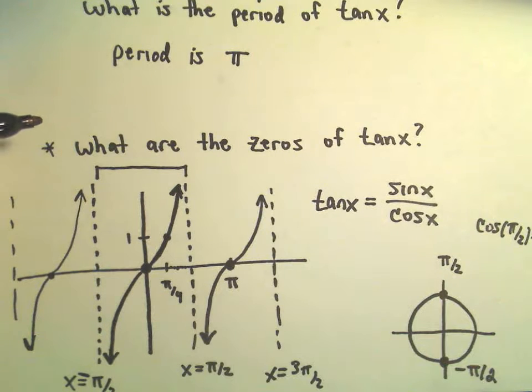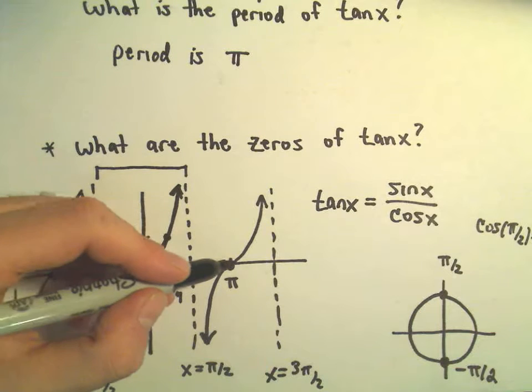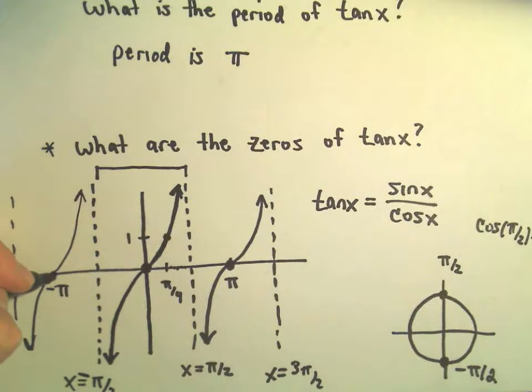What are the zeros of tangent x? Notice at x equals 0, we get a 0. At π, we'll get a 0. This would be negative π. We would get another 0.